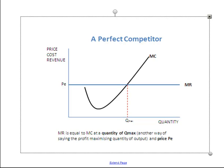This is a really important concept. What that says is that Q max is the quantity the perfect competitor should produce up to — don't make any more units than that, and don't make any less. Make exactly that many units, because it's the point where marginal cost equals marginal revenue. Now let's see if we can understand why, by looking at positions both below and above that position.